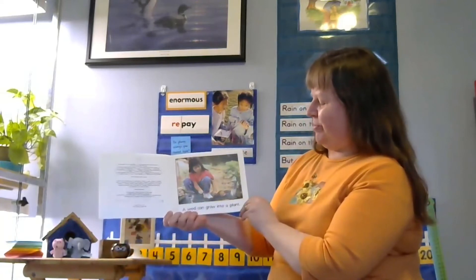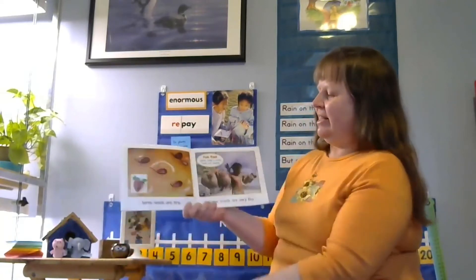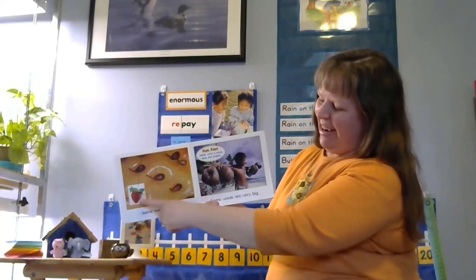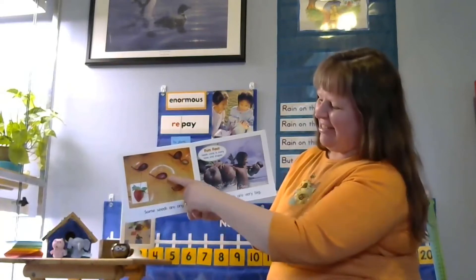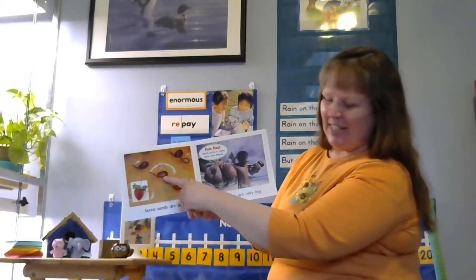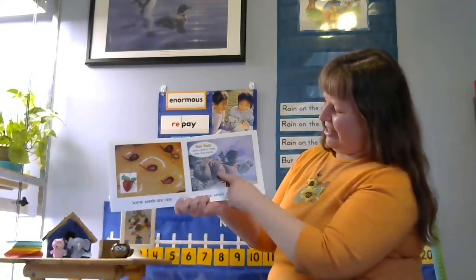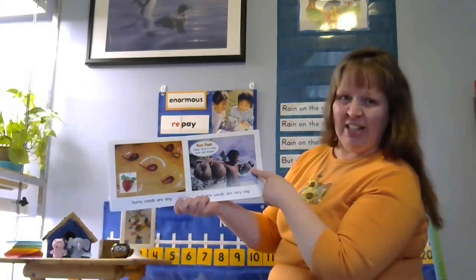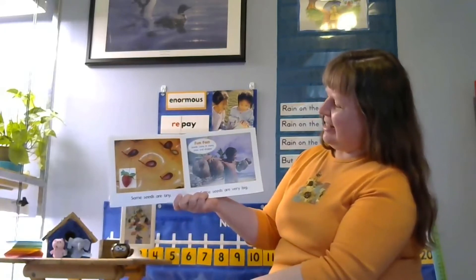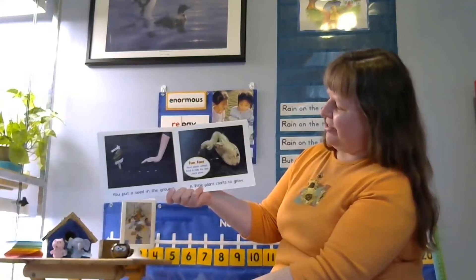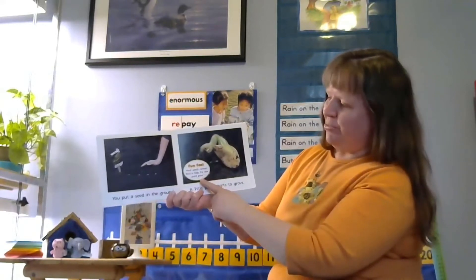A seed can grow into a plant. Some seeds are tiny. Now friends, this is a picture of a strawberry seed. So on the side of a strawberry, those little tiny black marks are seeds. Those teeny weeny little things are seeds and they can grow strawberry plants. Some seeds are very big and you can see this kid has some really large seeds he's carrying. It says seeds come in many sizes and shapes. You put a seed in the ground. A little plant starts to grow. Most seeds contain food to help the new plant grow.